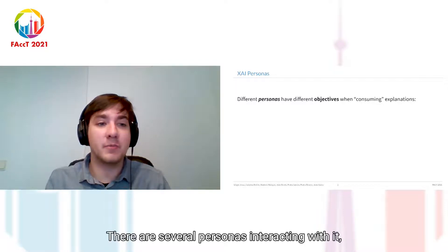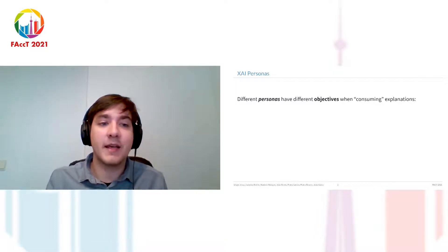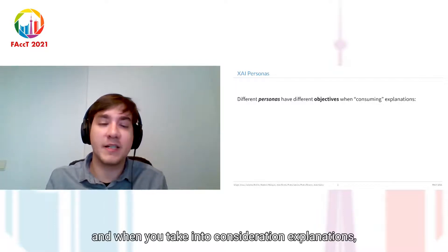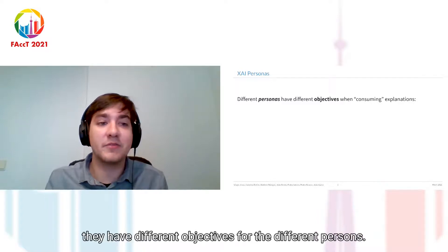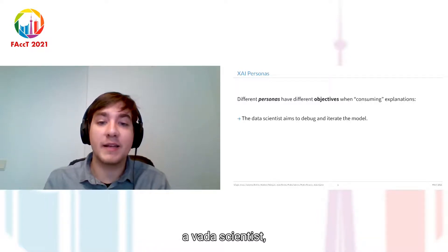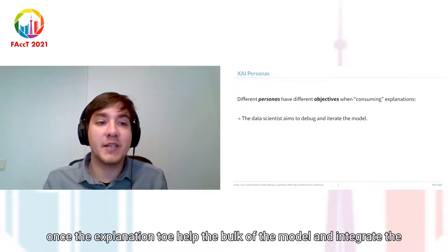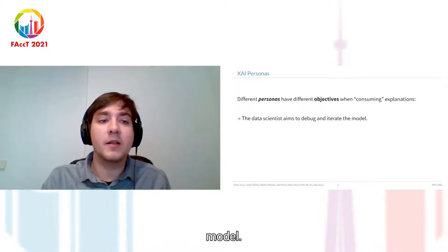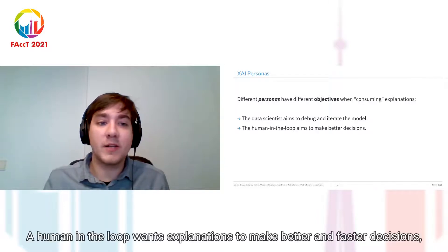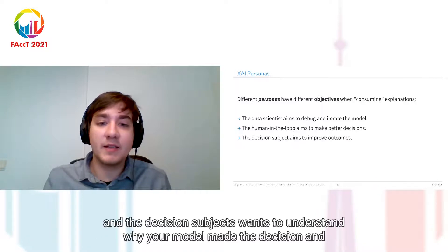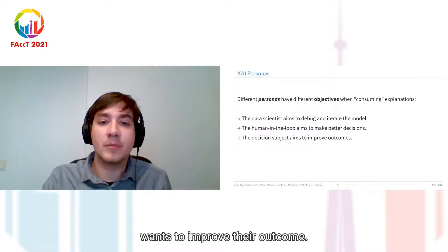In ML systems, there are several personas interacting with it. And when you take into consideration explanations, they have different objectives for the different personas. For example, a data scientist wants the explanation to help debug the model and iterate the model. A human in the loop wants explanations to make better and faster decisions. And a decision subject wants to understand why a model made the decision and wants to improve their outcome.